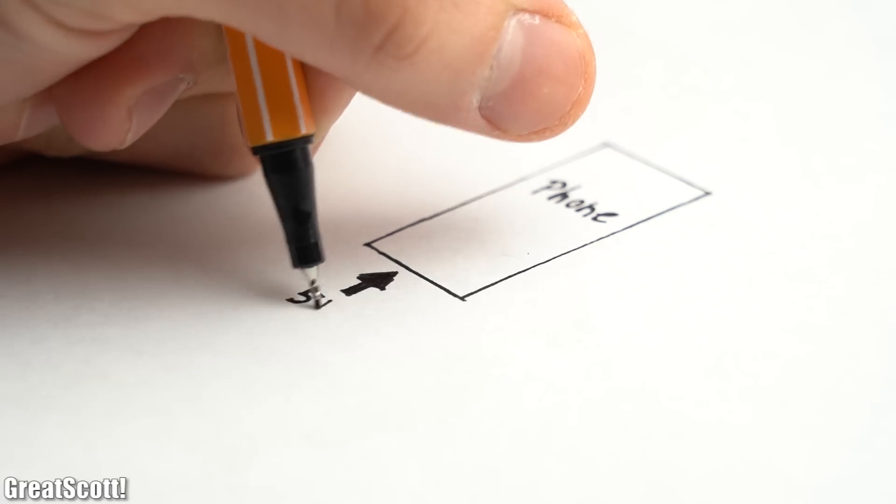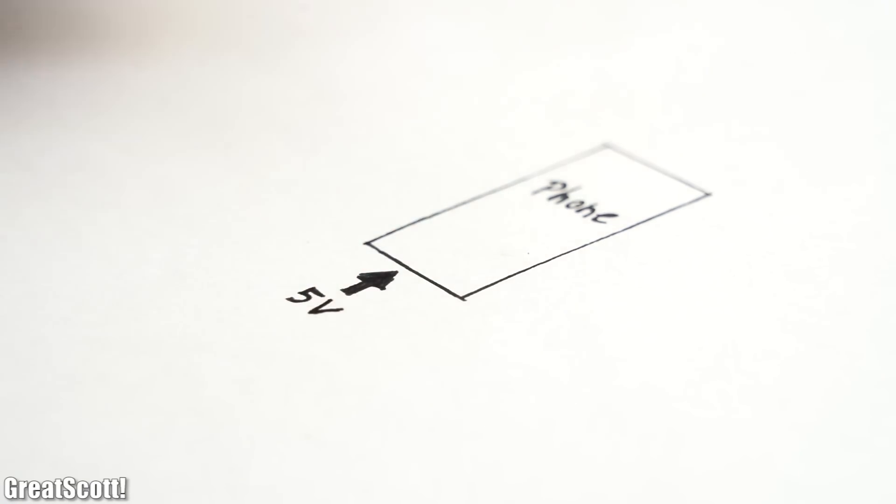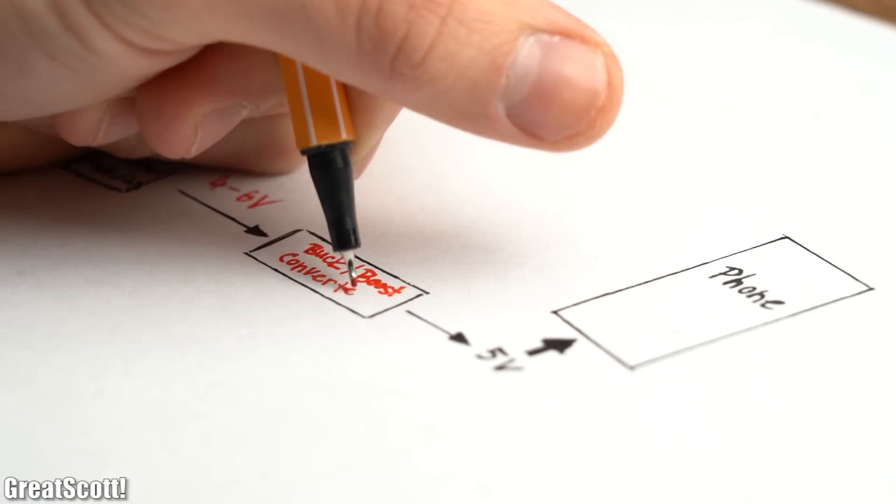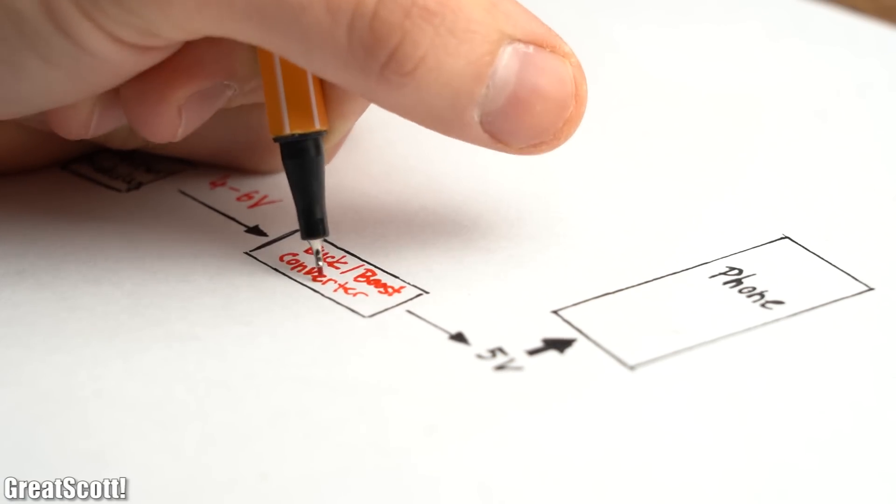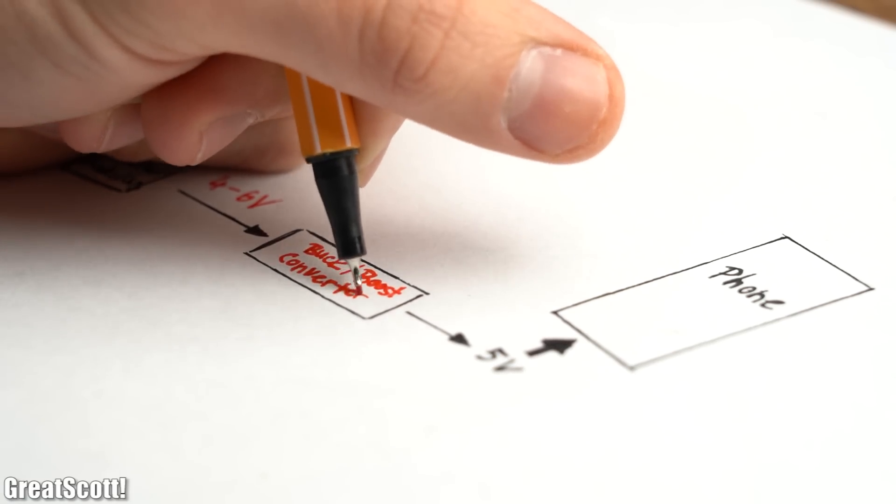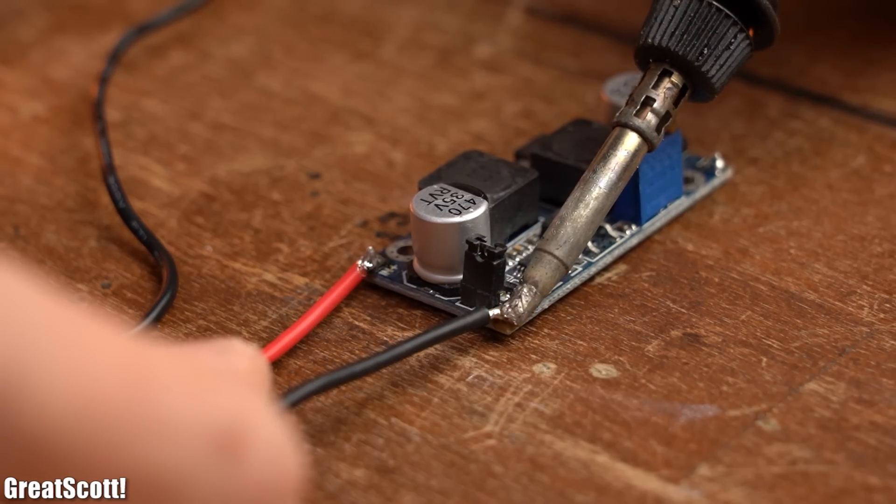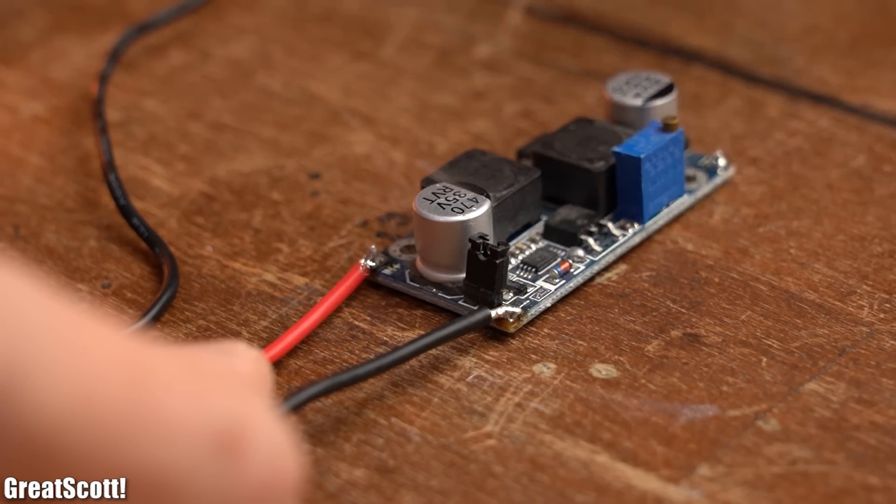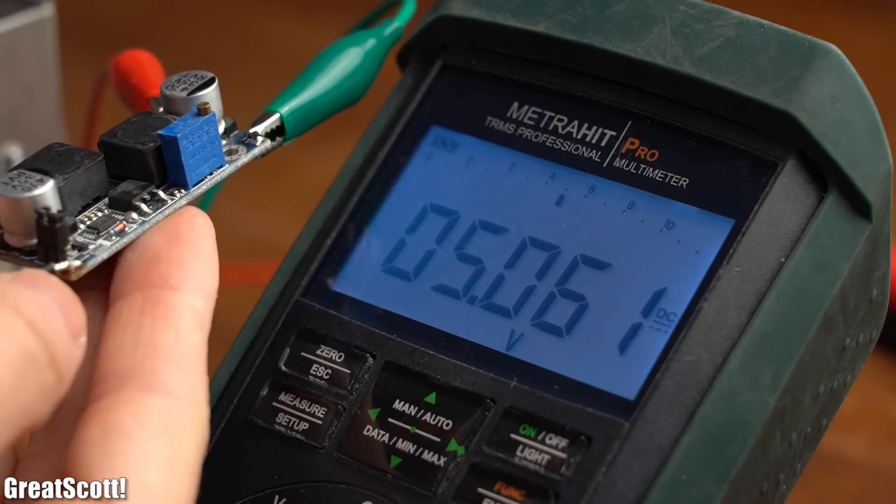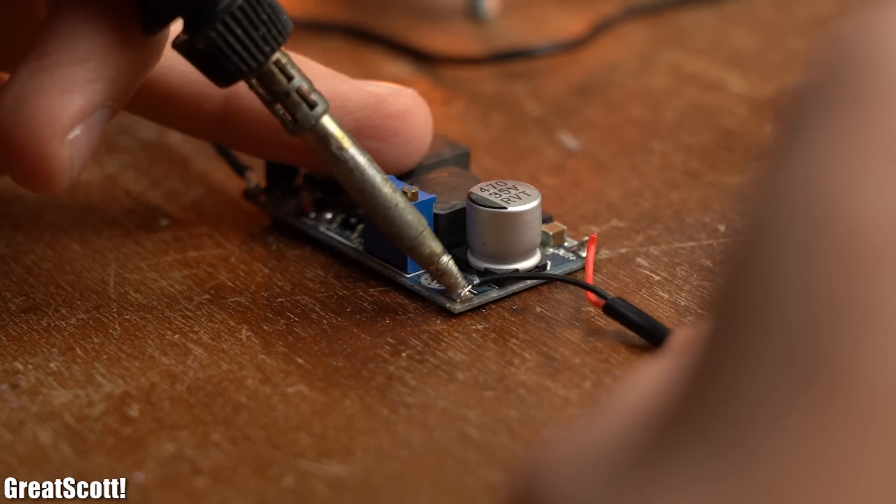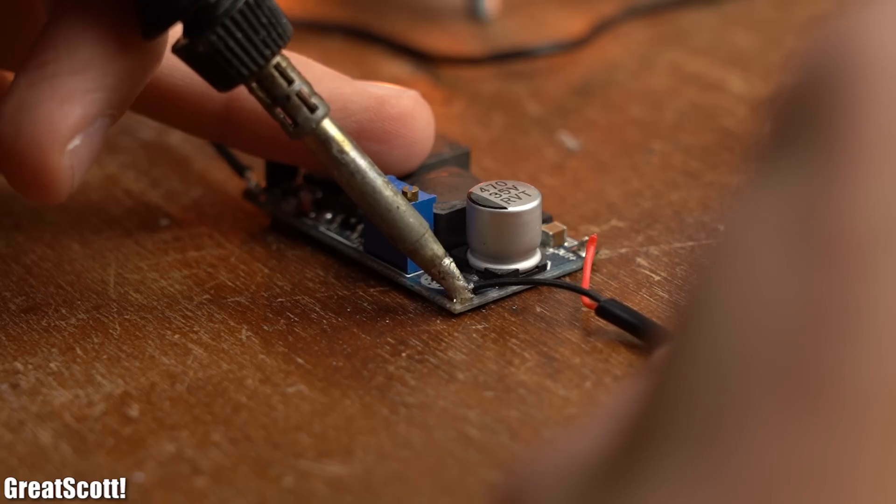Now in order to properly charge up a smartphone with a 5 volt input I still needed to add a buck boost converter between them in order to deliver constant 5 volts. So I added a fitting one to the output of the Peltier modules, adjusted its voltage to 5 volts and soldered the power wires of a micro USB cable to its output.